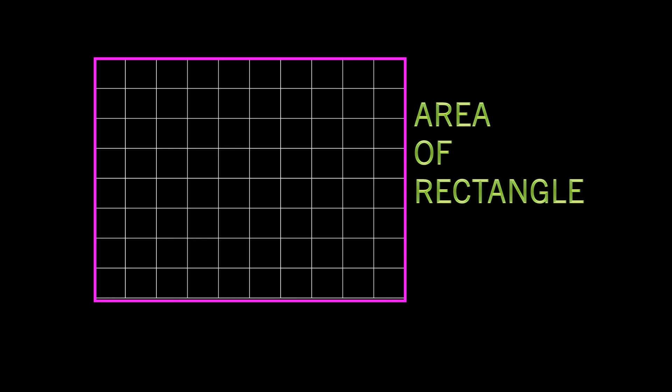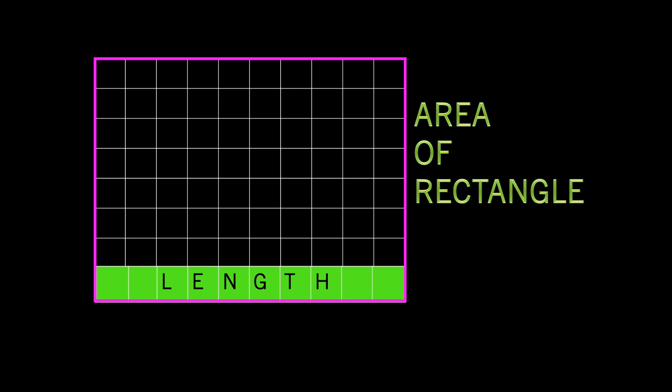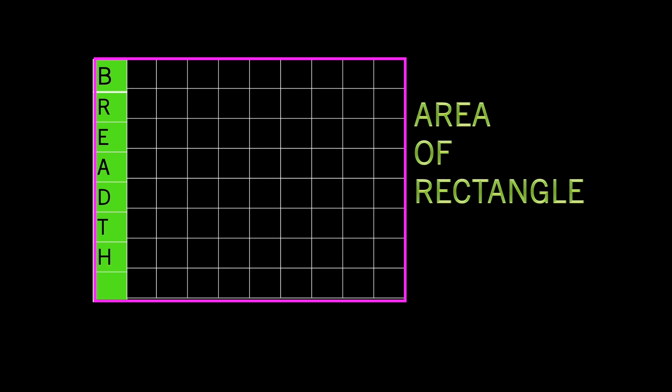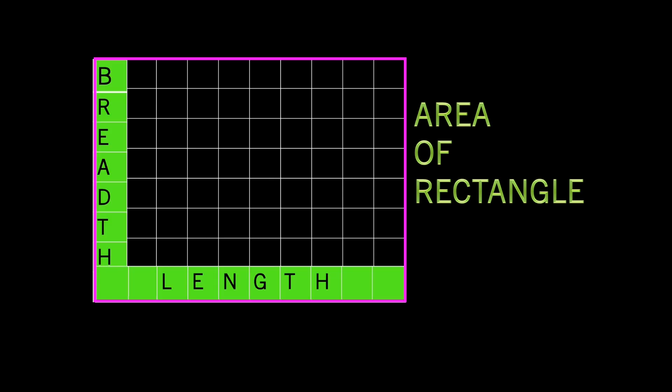This rectangular part is split into square units. To find how many square units are present inside, we don't count each one individually. Instead, we calculate how many square units are along each side and multiply them. That's why the area of a rectangle equals length into breadth.